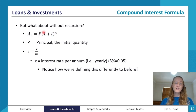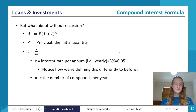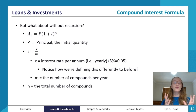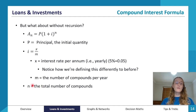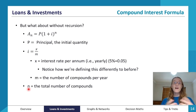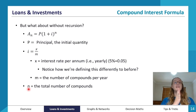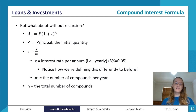P is the principal — our initial value. One plus the decimal rate of interest divided by the number of compound periods per year, to the power of n, which is the total number of compounds. For example, a loan compounding monthly over three years means n equals 12 times 3, which is 36 — because it's compounding every single month for three years.